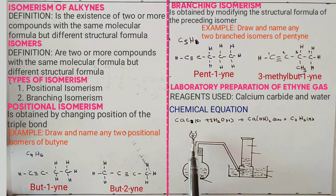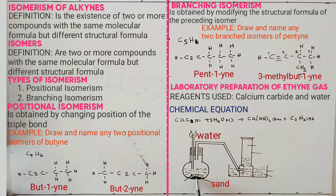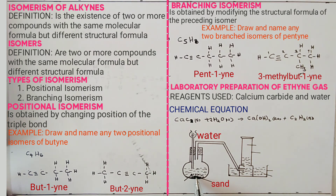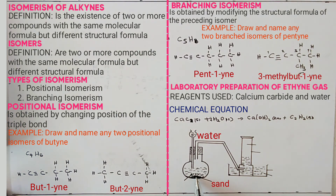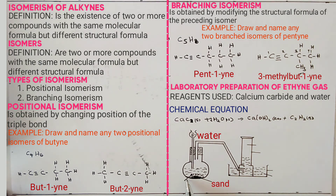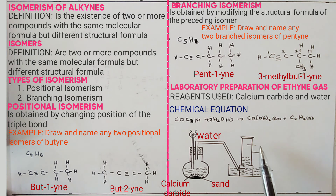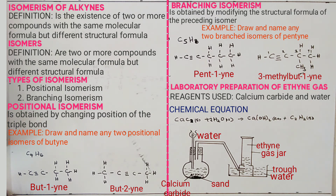In the setup diagram, water is placed on top with sand beneath it. The role of sand is to absorb excessive heat produced, because the reaction between calcium carbide and water is exothermic. When water enters the flask, the reaction takes place and the gas is collected over water. In the next lesson, we will look at the physical and chemical properties of alkynes. Thank you.